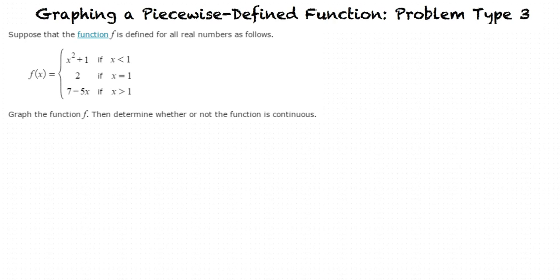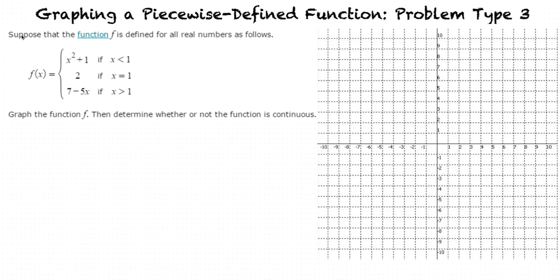We can see here that f is split into three pieces with three domains. The first piece is x squared plus 1, which is a parabola, so we will start by graphing x squared plus 1.